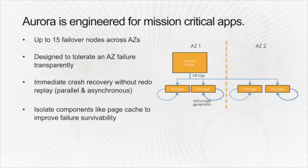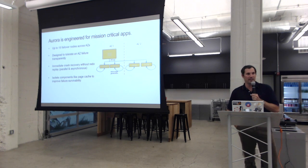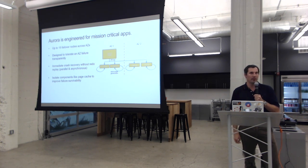Aurora is engineered for mission-critical apps as an always-on database. You have 15 read replicas for failover across availability zones. If there's a service disruption in an availability zone, it's designed to handle it completely transparently with no perceptible disruption during failover. Immediate crash recovery is a key property of log-structured storage — no lengthy period of replaying redo or write-ahead logs. And the page cache is kept warm in a separate process, so when the engine restarts you still have all the benefits of the cache.